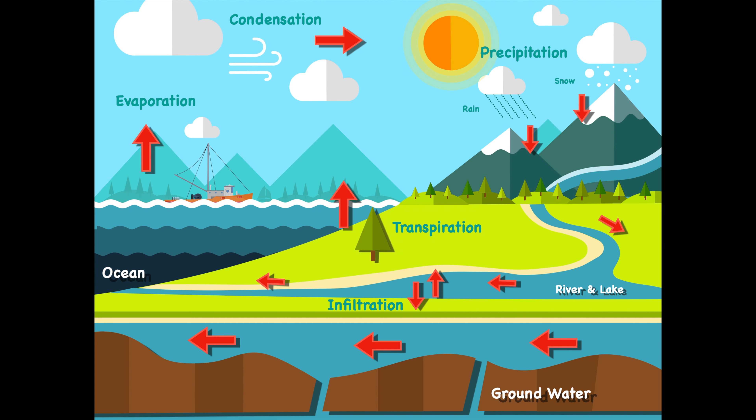The last process we'll look at is transpiration. Transpiration allows water to move through plants and life, then move back into the atmosphere. These are the four basic things we'll cover for the water cycle — precipitation, evaporation, condensation, and transpiration — and we'll look at each in more detail.